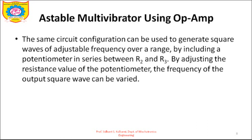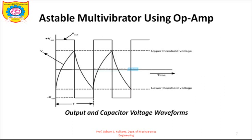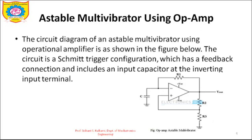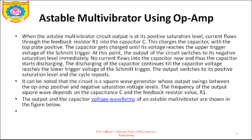By adjusting the resistance value of the potentiometer, the frequency of the output square wave can be varied. R2 and R3 decide the upper threshold value (VUT) and lower threshold value (VLT), while the charging and discharging of the capacitor is determined by resistor R1. This concludes the discussion of the astable multivibrator and its waveforms.